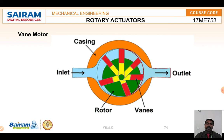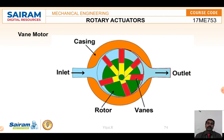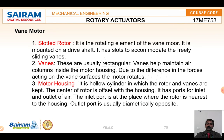The next type is the vane motor, where there are cylindrical vanes inside a cylindrical casing with an elliptical shape. In the vane motor, three important portions are there: a slotted rotor, vanes, and the motor housing. The slotted rotor is the rotating element of the vane motor, mounted on a drive shaft. It has slots to accommodate the sliding vanes, which are usually rectangular, and the vanes help maintain air columns inside the motor housing.